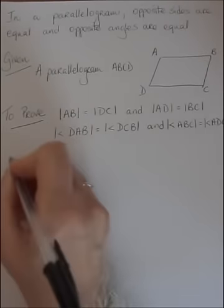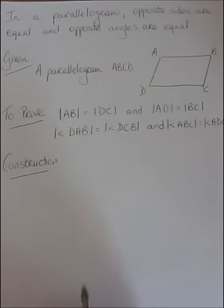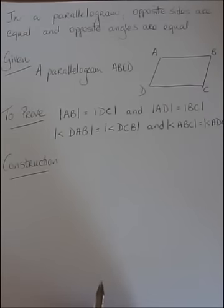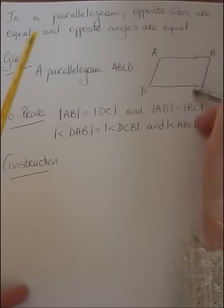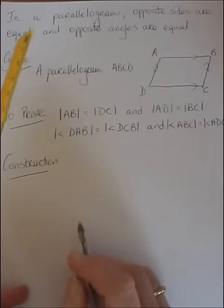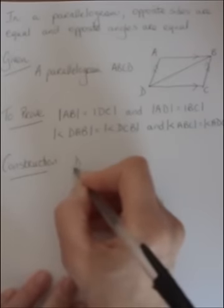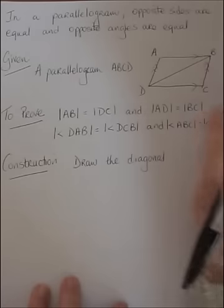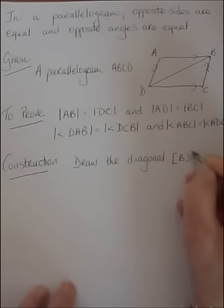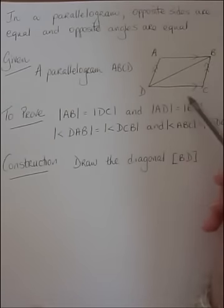Now to prove it, we need a construction. We haven't enough information to prove opposite sides and angles are equal, so I'm going to draw a diagonal — it doesn't matter which one. I'm drawing the diagonal because a parallelogram has opposite sides parallel, and drawing a diagonal gives us alternate angles. I've chosen diagonal BD — if you choose AC you'll still prove it correctly. It's a line segment, so I use square brackets, and now I'm numbering my angles so I don't have to do formal labeling all the time.